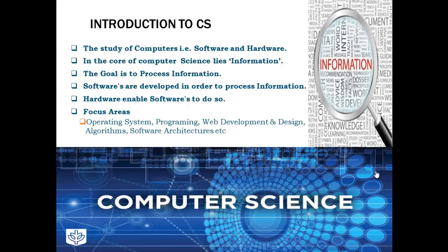Computer science is actually all about information processing. The goal is to process information — software is developed in order to process information and hardware enables software to do so. So if you are working in the area of computer science, your main focus will be in operating systems, how to develop operating systems, computer programming, web development and design, designing algorithms to solve problems, software architecture, and so on. Basically you are going to develop solutions or at least propose solutions to technical problems using these subjects.